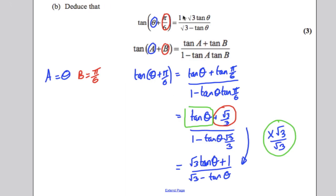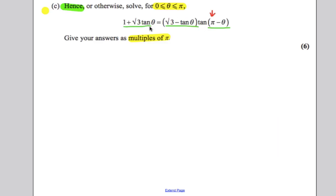1 plus root 3 tan theta, root 3 subtract tan theta, that's exactly this. So if we divided both sides of this by root 3 subtract tan theta, that whole bracket here, we're going to divide by this bracket, we would have 1 plus root 3 tan theta over root 3 subtract tan theta is equal to tan of pi minus theta.